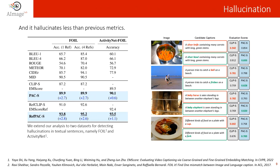Correctly identifying captions with potential object hallucinations is fundamental for the captioning task. Therefore, we extend our analysis to two datasets for detecting hallucinations in textual sentences: FOIL and ACTIVITY.NET FOIL. The FOIL dataset is composed of image-caption pairs from the COCO dataset, while the ACTIVITY.NET FOIL dataset contains video-text pairs from the ACTIVITY.NET test set. PACScore achieves better results than previous solutions, increasing the accuracy score by 2.7 and 0.6 points compared to CLIPScore and M-Score respectively. Similar improvements are also observed in the reference-based version, demonstrating our metric's capability to correctly identify hallucinated objects.